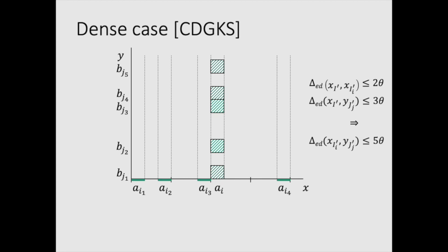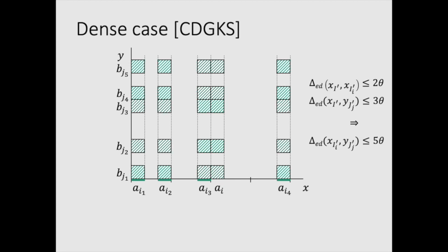then just by triangle inequality, again, you can actually conclude that all these marked boxes actually are matches between the subintervals ai's and bj's. And this is exactly the same as Joshua was talking about their dense case. This is the biclique we actually derive.